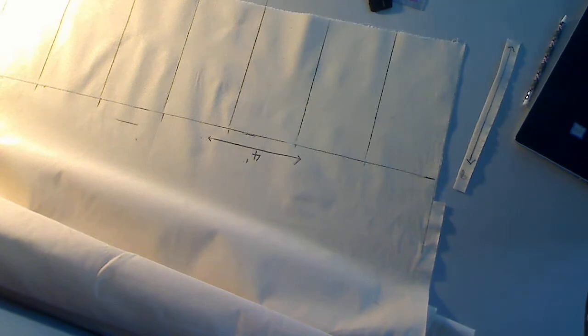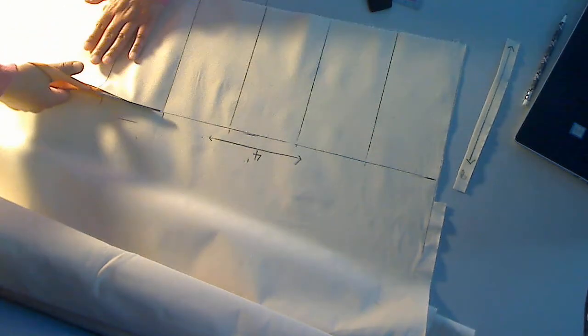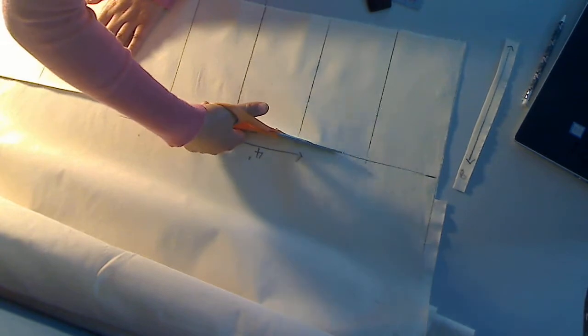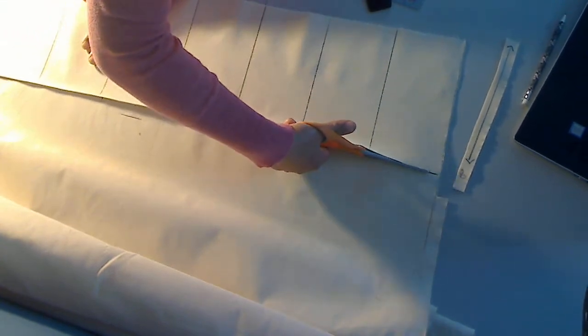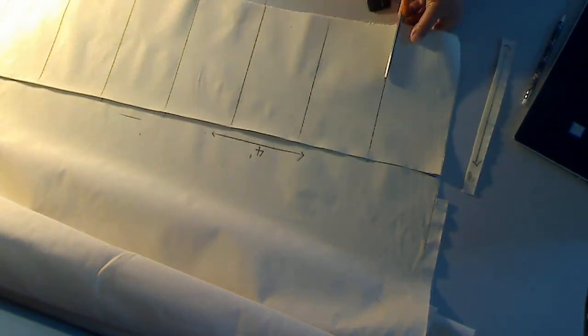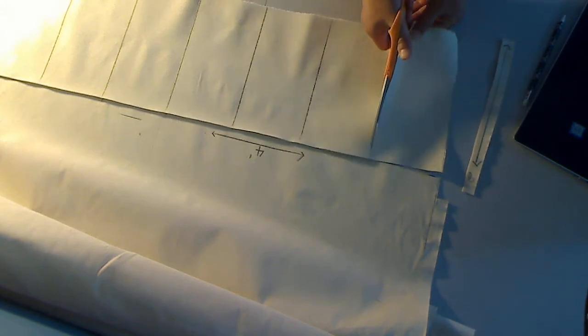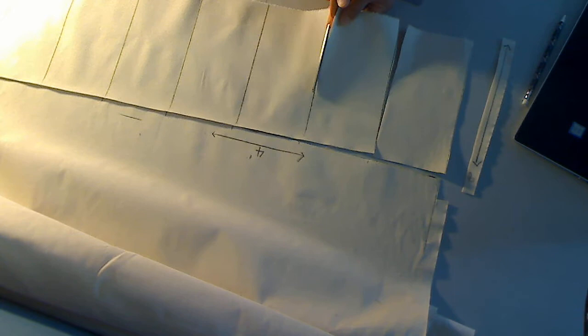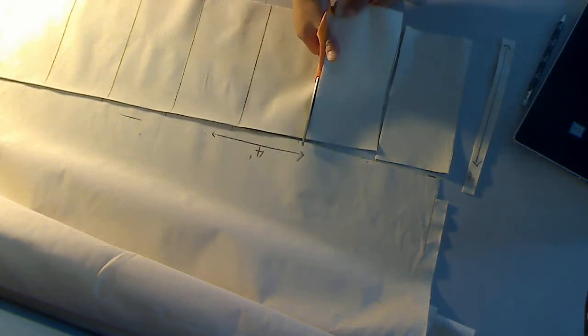I'm going to cut this. There we go. I'm going to cut each segment that I just drew. Once again, the length of this muslin is eight inches. The width of this muslin piece is four inches. Cut this. You can cut it out all the way.